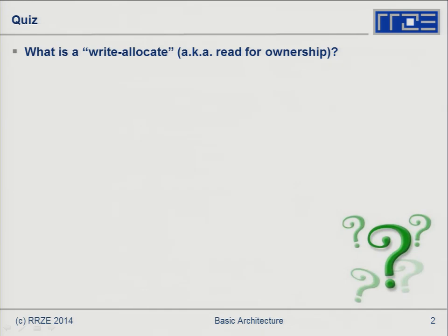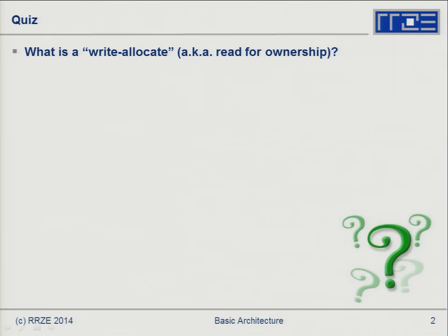First question: what is a write-allocate — also called a read-for-ownership? Who knows what that is? Write-allocate has something to do with processors, caches, and computer architecture. Who here has a computer architecture background?